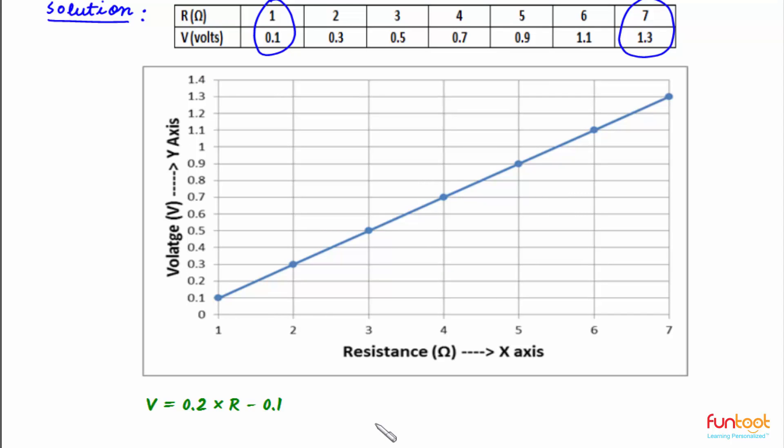So this will imply voltage is equal to 0.2 multiplied by the value of R, which is set to 5 ohms, minus 0.1. This implies V = 1 - 0.1 = 0.9 volts.